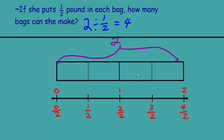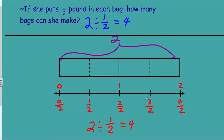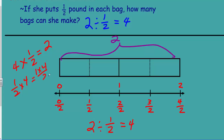So there are four halves in two wholes. Two divided by one half equals four — she can make four bags. To check our work, we take the quotient four times the divisor one half, which equals four over two, which is four divided by two, which equals two. That brings us back to our dividend — correct!